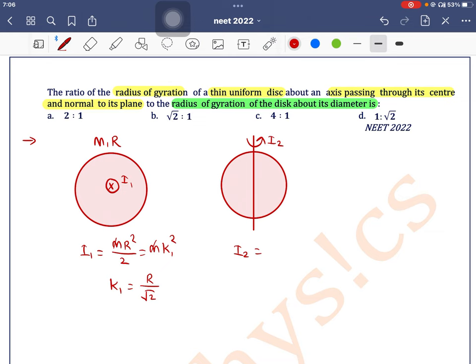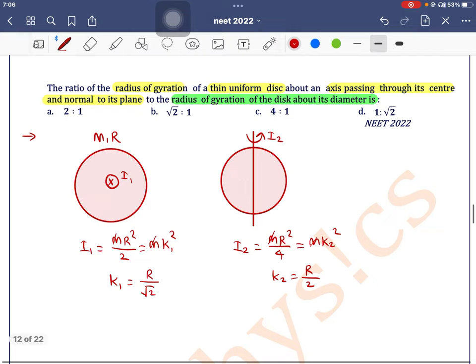can write I2 equals MR squared by 4. Equate this with MK2 squared, M's cancel out, so K2 equals R divided by 2.